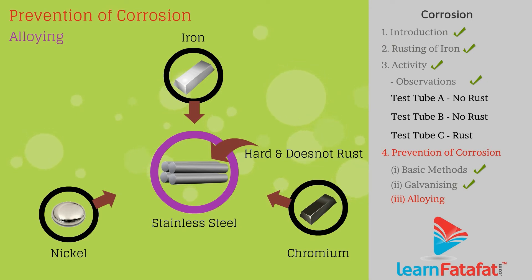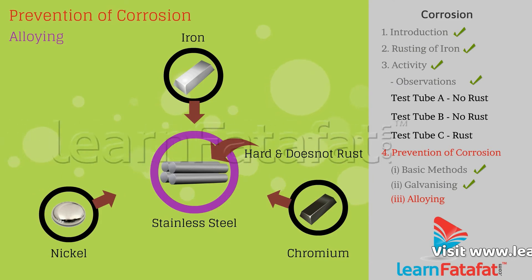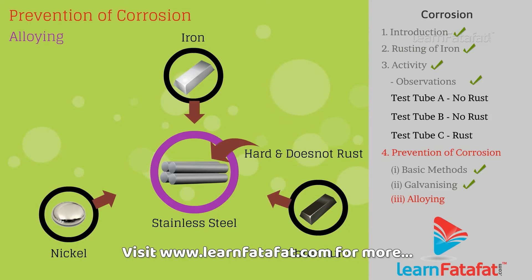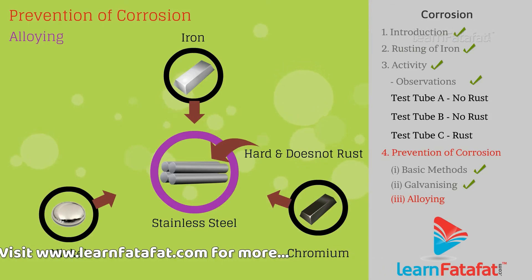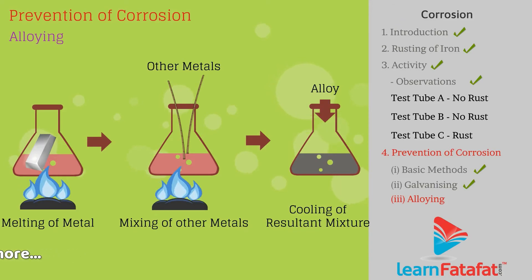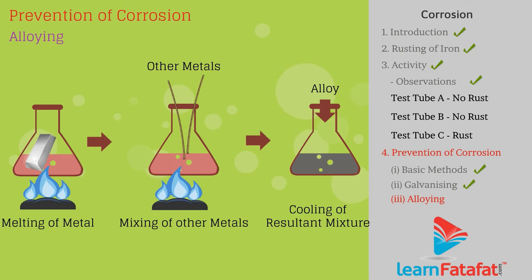Similarly, iron is mixed with nickel and chromium in the same proportion to get stainless steel, which is hard and does not rust. While making an alloy, the primary metal is melted first and then a definite proportion of other metals or elements are dissolved in it. This mixture is allowed to cool, thus getting an alloy.